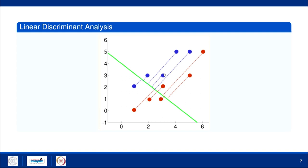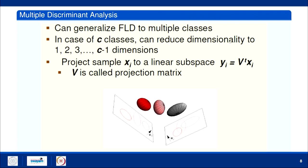This is Linear Discriminant Analysis. You can generalize it to multiple classes: in the case of C classes, you can reduce dimension up to C minus 1 dimensions. For example, with 10 classes you can reduce to at most 9 dimensions. Each sample xi is projected to a linear subspace yi using projection matrix V-transpose. For instance, in 3D, in the subspace W1 the classes are well separated in R2, while in another direction they are not. The projection matrix is found using the concepts of LDA.